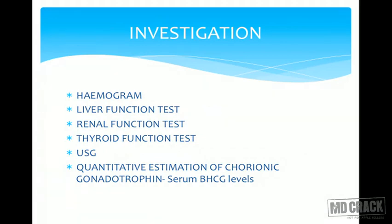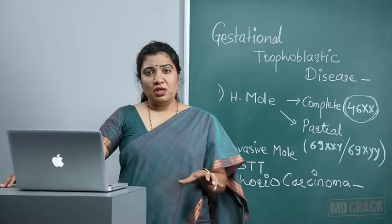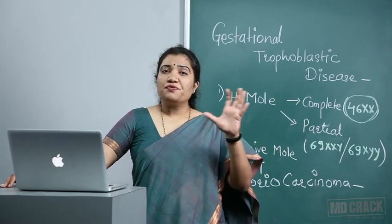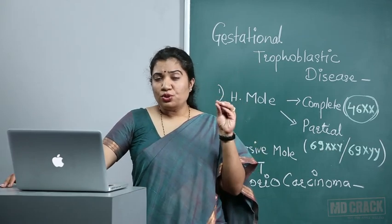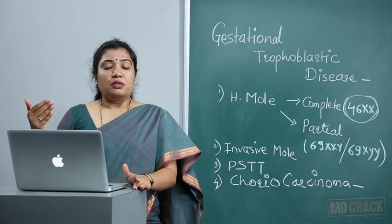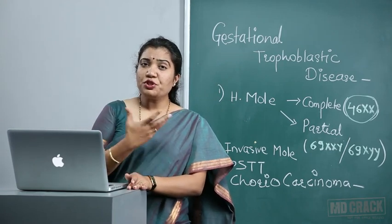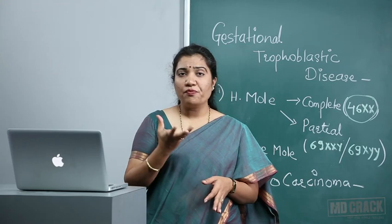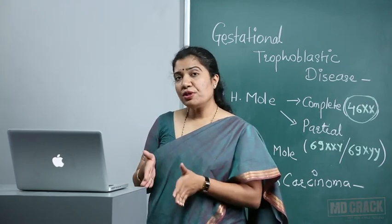Investigations include blood group, hemogram, liver function tests, renal function tests, and thyroid function tests. The investigation of choice to confirm the diagnosis is ultrasound, which shows the characteristic snowstorm pattern — echogenic reflections resembling a snowstorm. Ultrasound confirms absence of a fetus and the presence of multiple vesicles within the uterus.